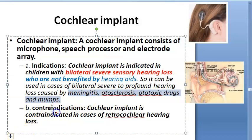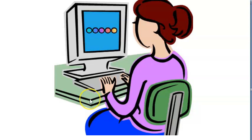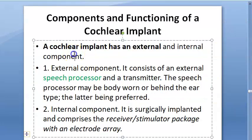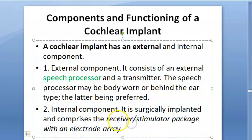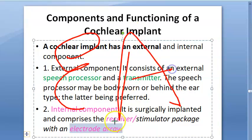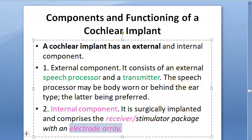Contraindication: it is contraindicated if there is retro-cochlear hearing loss - behind the cochlea. If the hearing loss is behind the cochlea, a cochlear implant cannot fix it; that may be a nerve issue. In retro-cochlear hearing loss you cannot give this. Components: external component is the speech processor; internal component includes receiver, electrode array. The most important element of a cochlear implant is the electrode array - everything else externally is almost the same as other hearing devices.